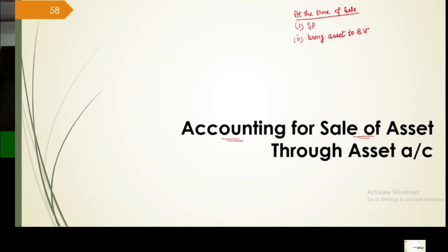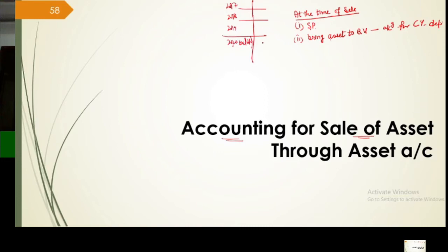The second thing is bringing the asset to book value. When you bring the asset to book value, all calculations involve depreciation right from purchase to sale. But in accounting, we only record the current year's depreciation. Because accounts have been building up — suppose you bought the asset on 1-1-2016, so accounts for 2016, 2017, 2018 are already made. If you're selling it in 2020, the 2020 balance appears here, and only this year's depreciation is applied.